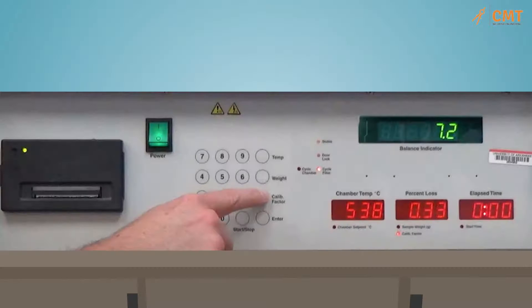Input the binder calibration factor by pressing the Calib factor button, then quickly entering the value and pressing enter. The decimal is automatic, so a value of 0.18 would be entered as 018. Verify the entry by pressing the Calib factor button again.